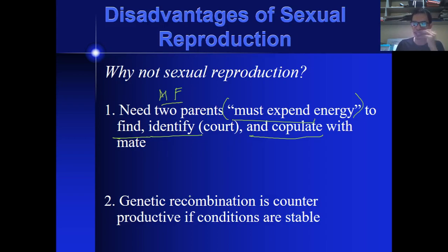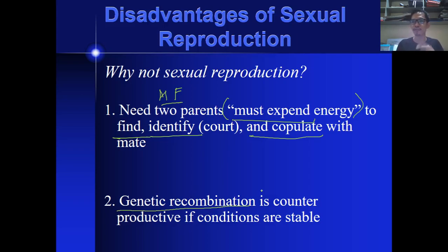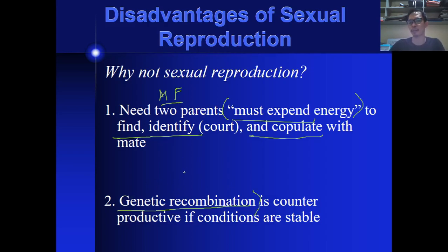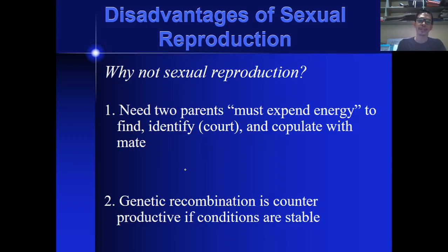Genetic recombination is counterproductive if conditions are stable. This is where genetic recombination becomes useless due to the idea that the environment is stable. Why do you need to recombine if the environment is too stable? If the environment is too stable, then genetic recombination becomes useless. But stable environment is very rare — environment always changes over time.